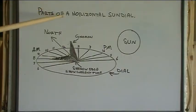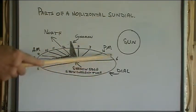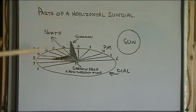Let's look at the parts of a horizontal sundial. Here we have the dial portion, and here we have the gnomon. The gnomon is that triangle part that sticks up on a sundial. And noon points to north, true north,